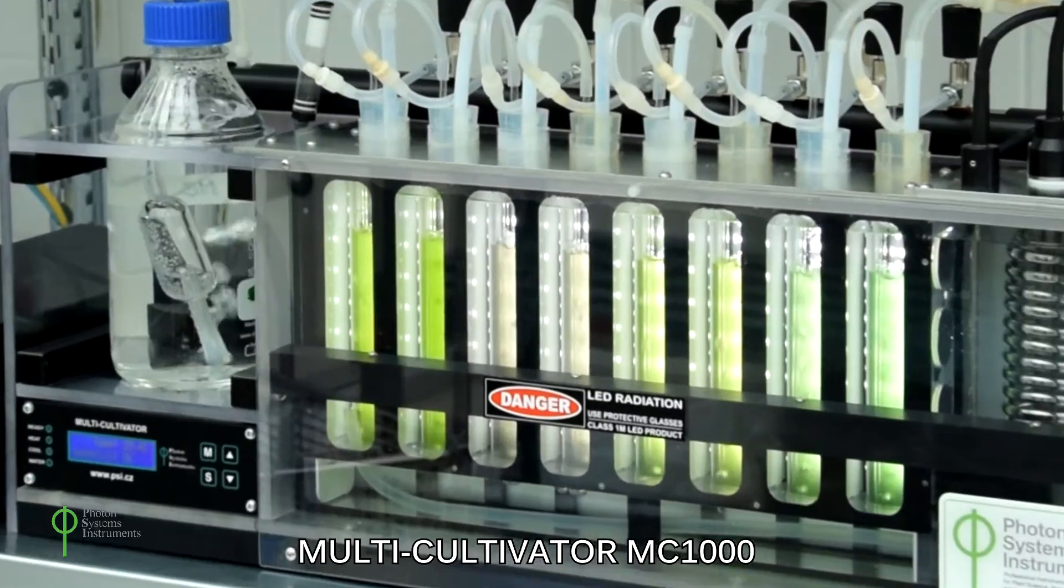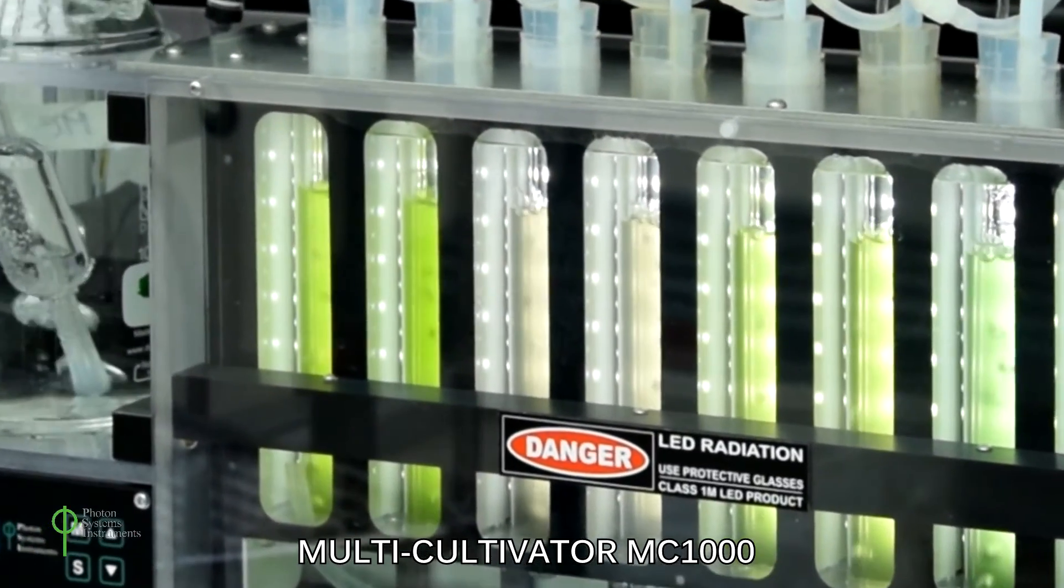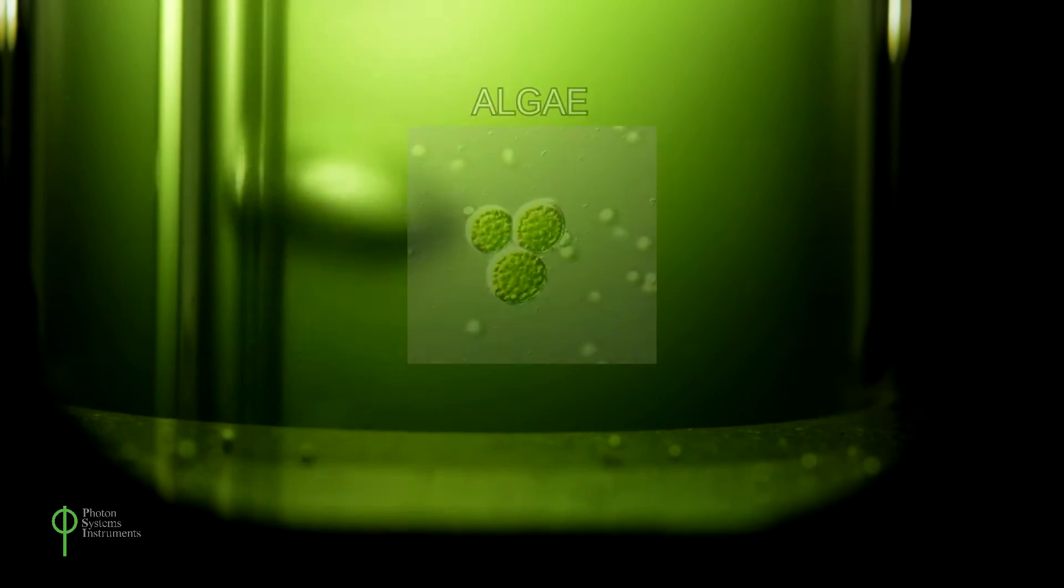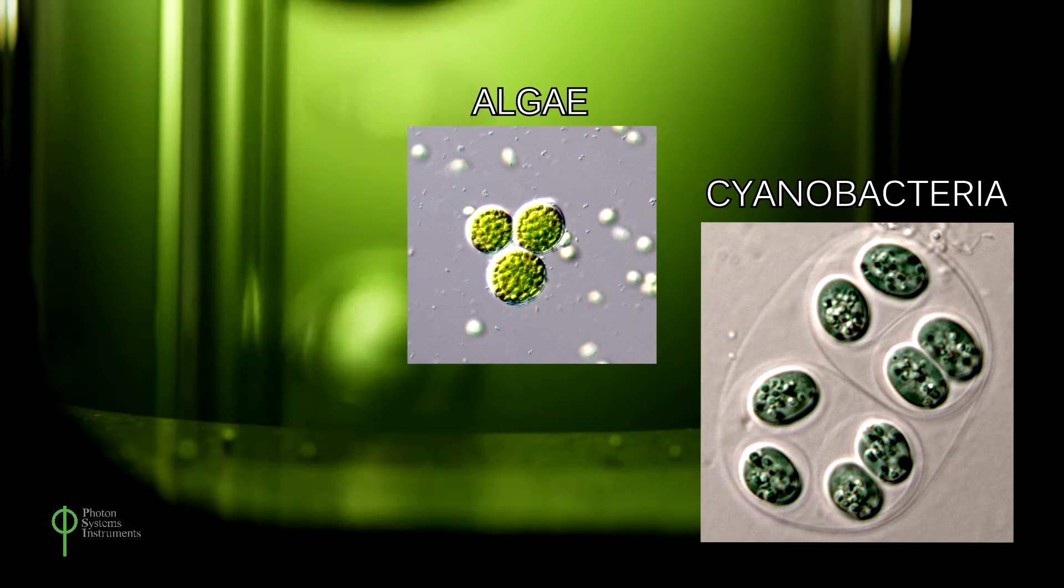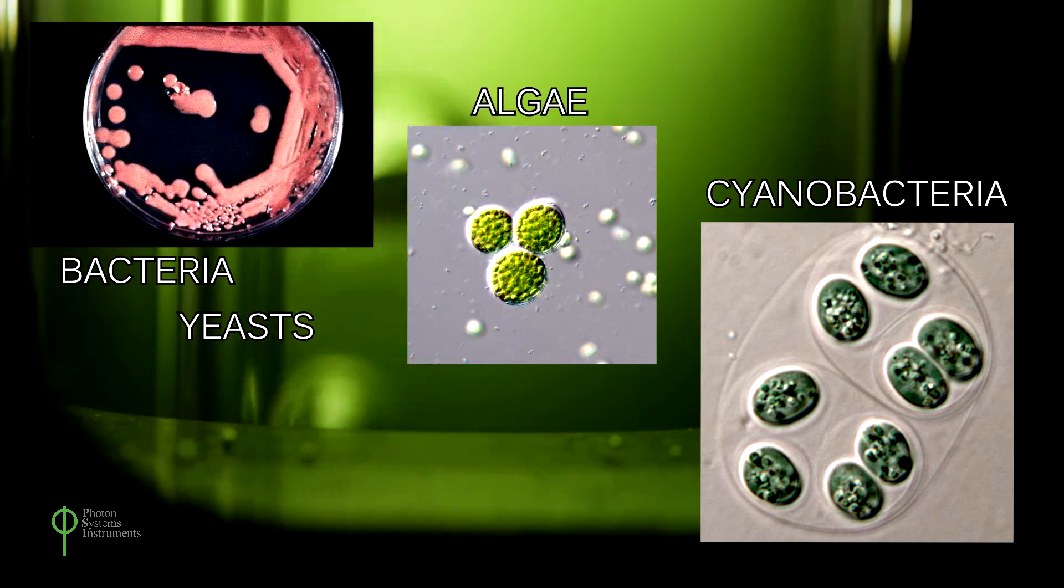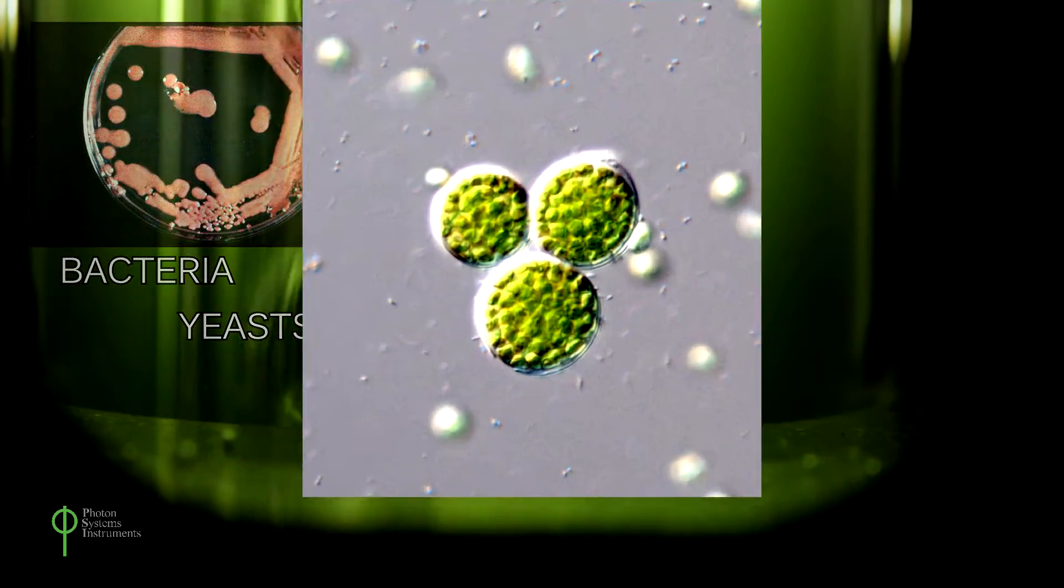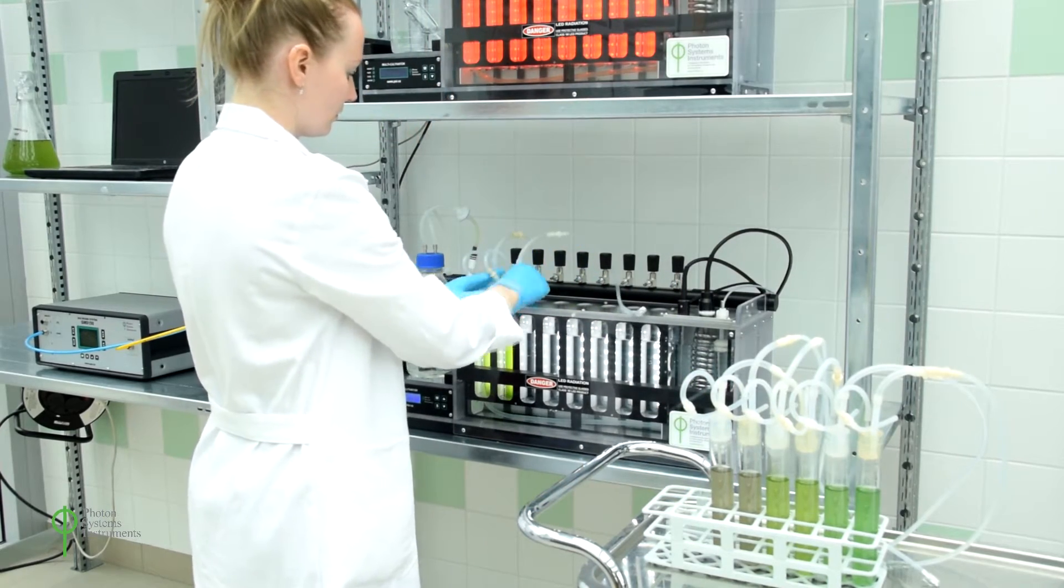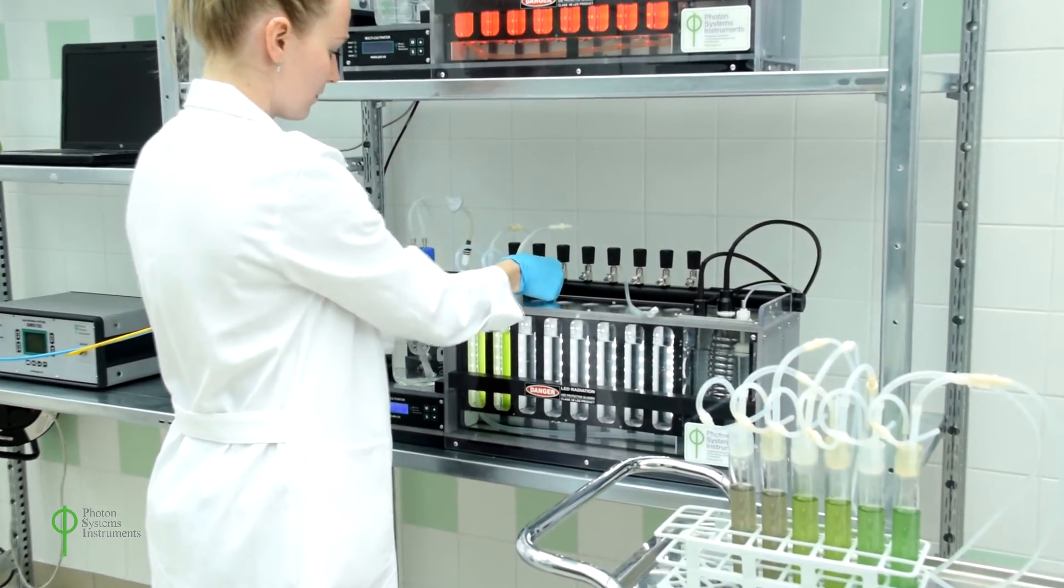The MC1000 Multicultivator is a cost-effective small-scale device designed for autotrophic or mixotrophic cultivation of microalgae and cyanobacteria. It can also be used for heterotrophs such as bacteria and yeasts. The MC1000 is a powerful tool for cultivation in parallel or multiple experimental setups.